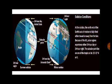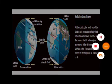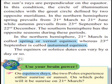Here a question was asked in 'Use Your Brain Power': on equinox days, the two poles experience either sunrise or sunset. On which pole will it be sunrise on 21st March? You can look at the diagrams and give the answer.